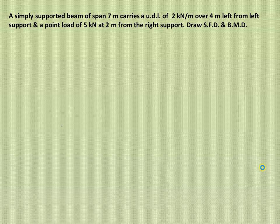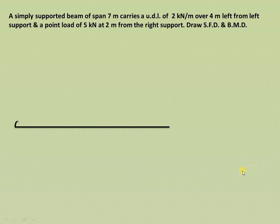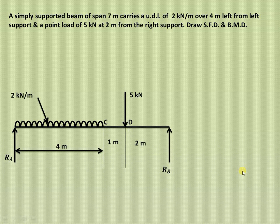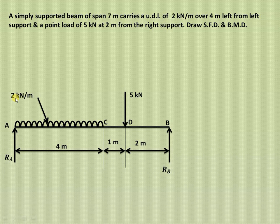Let us understand how to draw the shear force and bending moment diagram for a simply supported beam carrying a UDL and a point load. We have a simply supported beam of span 7 meters, carrying a UDL of 2 kN per meter over a distance of 4 meters from the left hand support, and a point load of 5 kN acting at a distance of 2 meters from the right hand support.